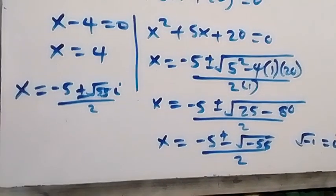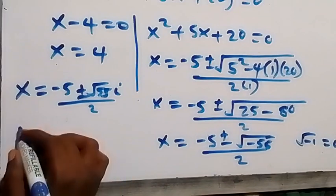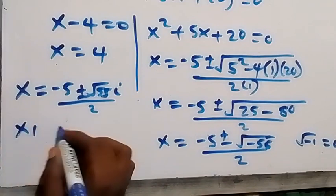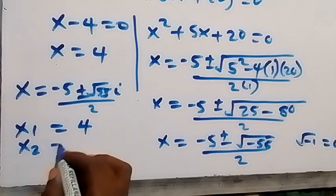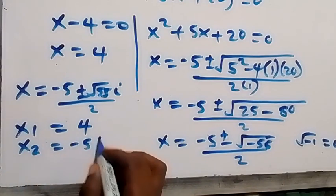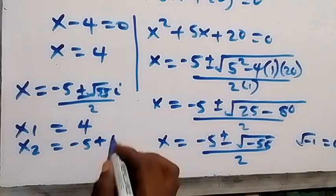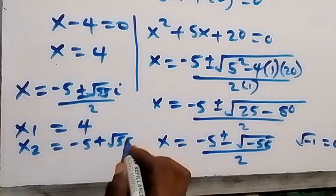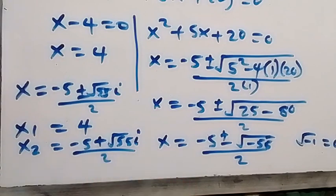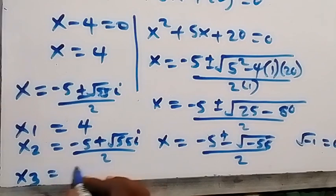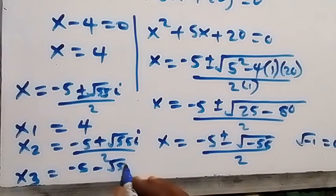Writing out the final answers: x₁ = 4, x₂ = (−5 + √55 · i) / 2, and x₃ = (−5 − √55 · i) / 2. These are the three possible solutions to the given problem.